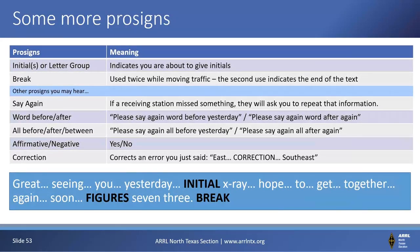Some more prosigns: 'initials' or 'letter group' when giving initials. 'Say again' if you need something repeated — 'please say again word after together' or 'please say again all after together' — which probably means you talked too fast. 'Affirmative' and 'negative' are preferred over yes and no — longer words have a better chance of being heard clearly over the air. If you made a mistake and need to correct it, 'correction' is the prosign: 'together again, correction, soon, figure 7-3.' You can introduce that correction right in the flow.